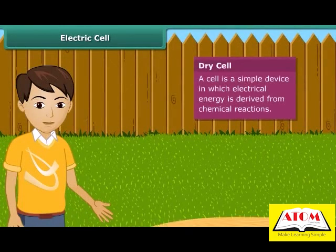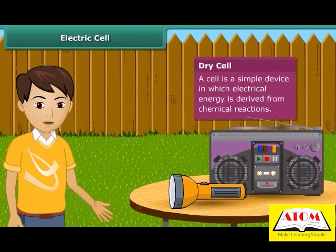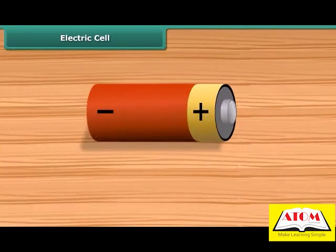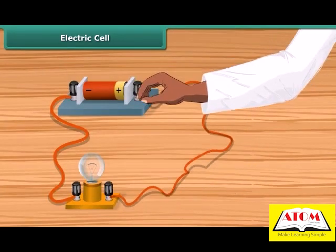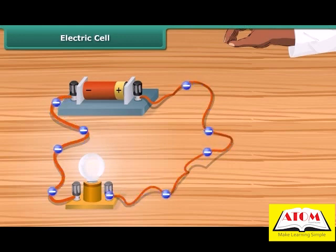A dry cell battery used in a torch or transistor radio is a source of electric current. Every battery has two terminals marked plus and minus. When a metallic wire connects these two terminals, the electrons resulting from chemical reaction start flowing through the wire, constituting an electric current. These electrons flow from the negative to positive terminal. Thus, a cell is a simple device in which chemical energy is changed into electric energy.